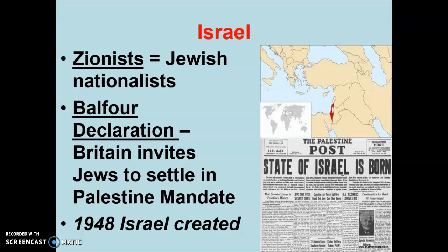In 1948, after World War Two, we have the state of Israel created by the UN. A lot of this has to do with the Holocaust and all the horrors that the Jewish people experienced. There was a big push for the creation of a home state, a home country for the Jewish people. And traditionally, this is the home of the Jewish people, so they decided Israel is going to be the new state for Jewish people, and they created a new country in Israel in 1948.